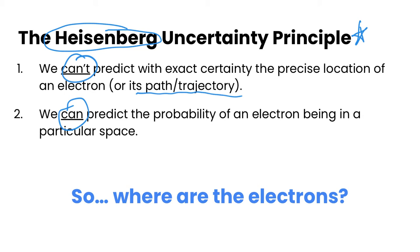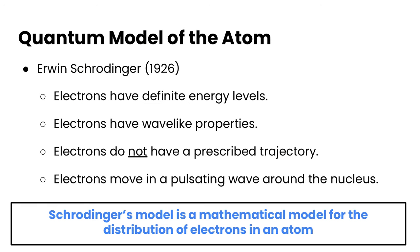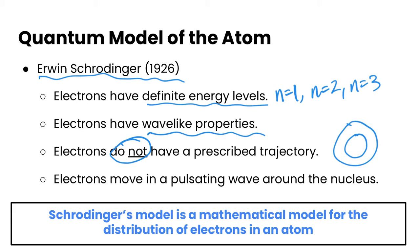So that begs the question, where are the electrons and what is this probability and how does this fit with our atomic model? This is where Erwin Schrödinger came in, early 1900s, 1926. He came up with the quantum model of the atom from all of this evidence. The quantum model says that electrons still do have definite energy levels: n equals 1, n equals 2, n equals 3, and so on. But because electrons have wavelength properties they don't have a prescribed trajectory. They are no longer moving in these one-dimensional orbits.